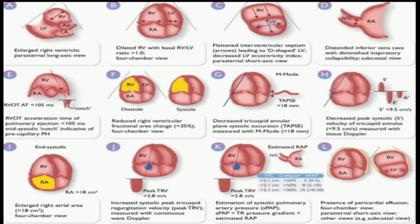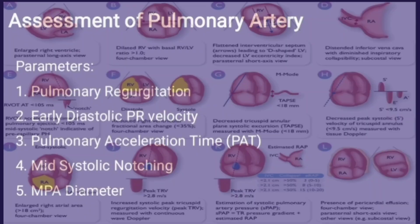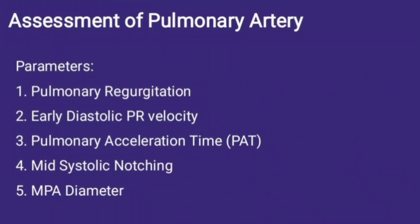Here is a better demonstration of what views you have to take, how to measure all the parameters, their significance, and their normal values. For better understanding, we'll start with the assessment of the pulmonary artery first. The parameters we need to measure while assessing the pulmonary artery in the short axis view include pulmonary regurgitation, early diastolic PR velocity, pulmonary acceleration time (PAT), mid systolic notching, and MPA diameter.